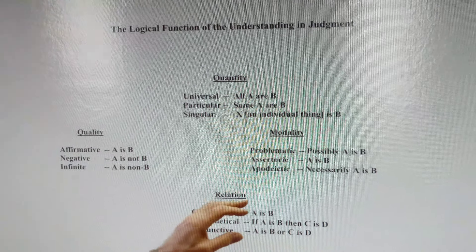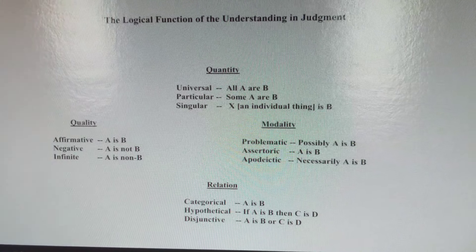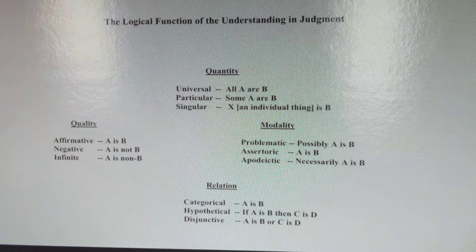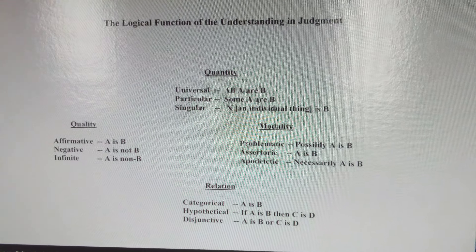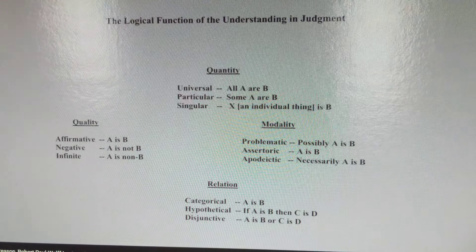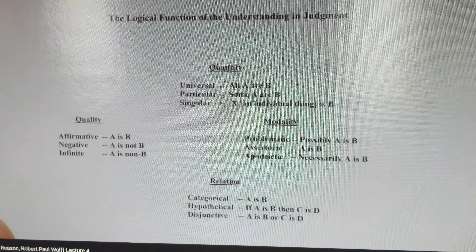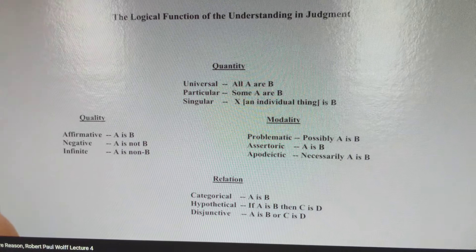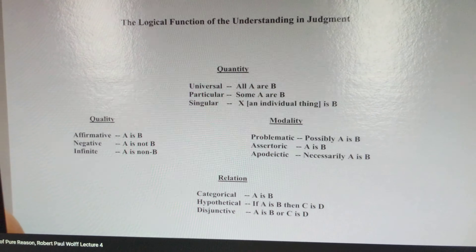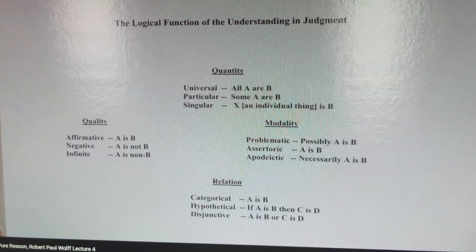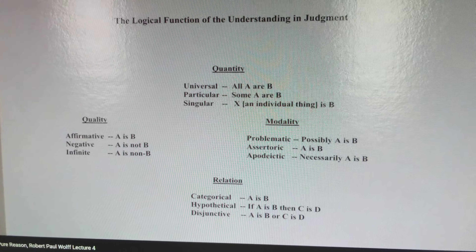And finally, there's the modality. A judgment can be asserted problematically — possibly A is B — or assertorically — A is B — or apodictically — necessarily A is B. Now, if you think about it, you have three sets of three, and if you combine them, you have three times three times three, which is 27 different judgment types.